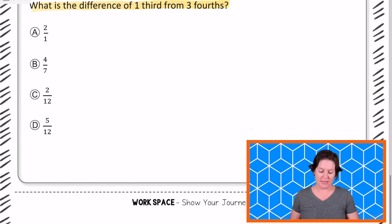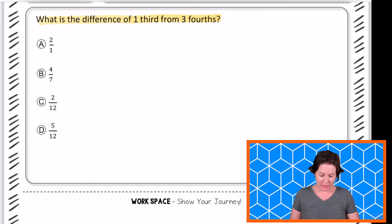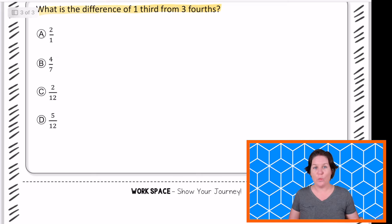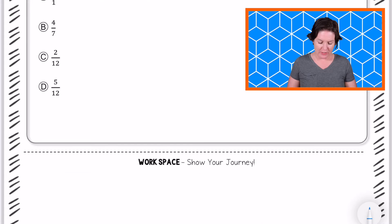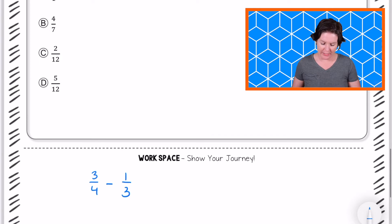Be careful with this one because we have that word from. When we're taking something from it, we are taking one-third from three-fourths. That would mean that we are, if this is three-fourths, we are taking one-third from that. That's how it should look, okay?